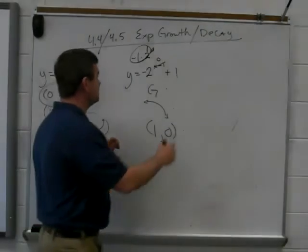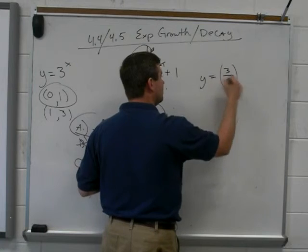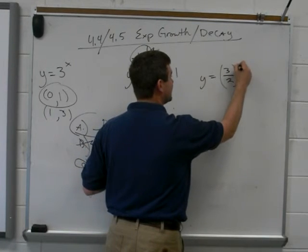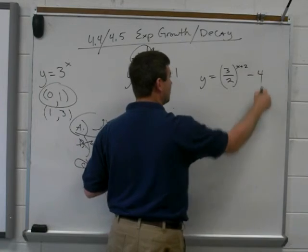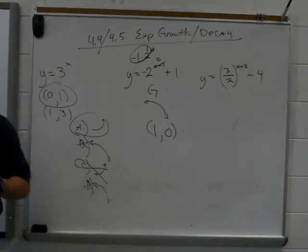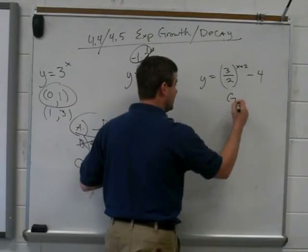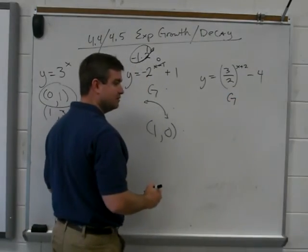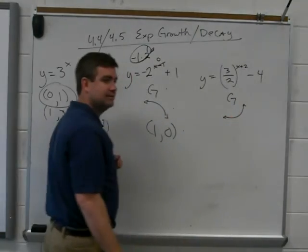You want to do one more? Let's do one more. Let's say Y equals three over two raised to the X plus two minus four. Okay? First question. Growth or decay? Growth. Growth, right? Because three over two is bigger than one. Is it going to look like a J or a seven? A J, right? It's going to be going up like this.